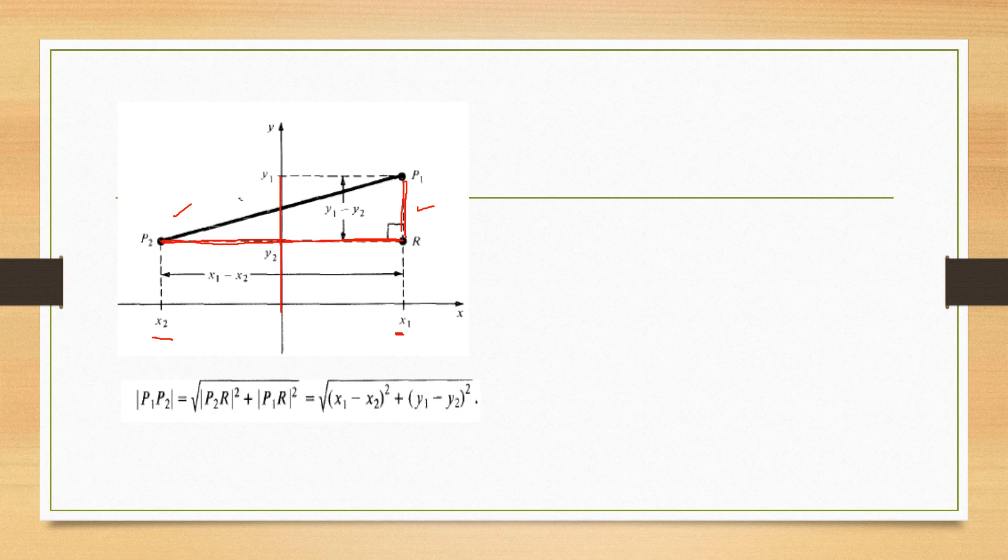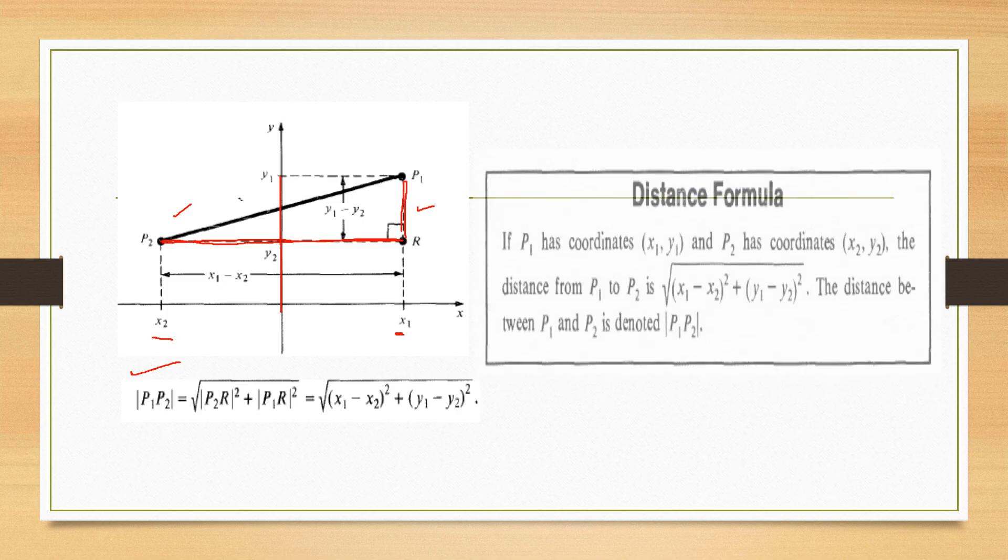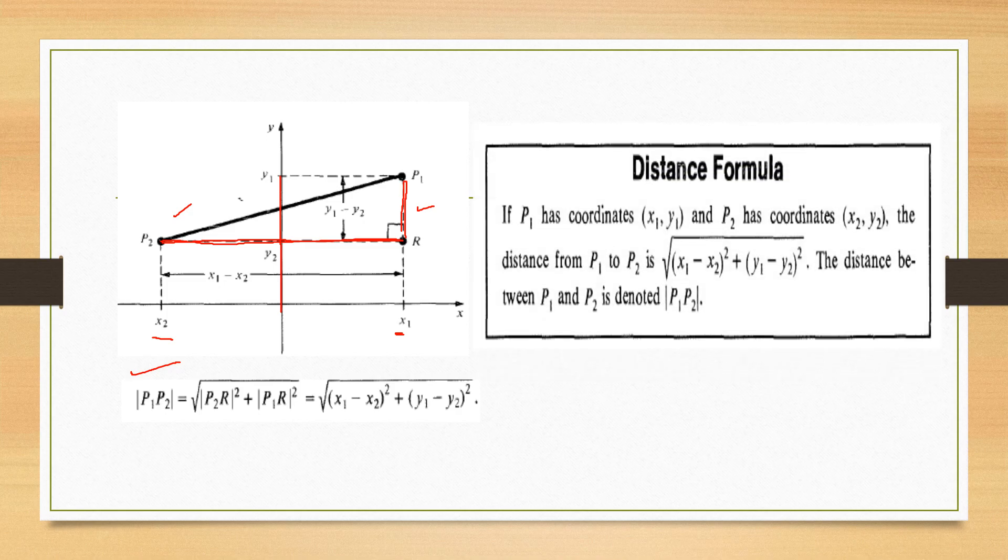Now we know about the Pythagorean's law. And using the Pythagorean's law, we can find P1 P2, which is the length of a line from a point P1 to P2 or P2 to P1. And the distance formula is shown here.